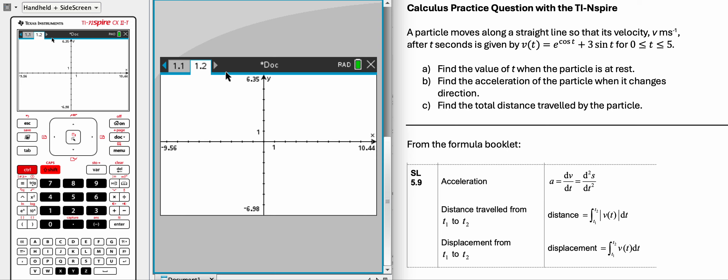A particle moves along a straight line so that its velocity v in meters per second after t seconds is given by v of t equals e to the power of cos t plus 3 sine t from 0 to 5 seconds. Find the value of t when the particle is at rest. Find the acceleration of the particle when it changes direction. Find the total distance traveled by the particle.